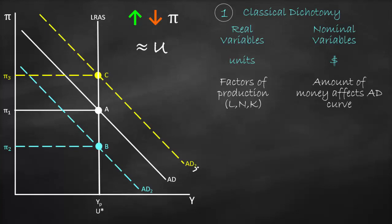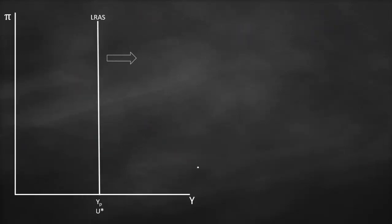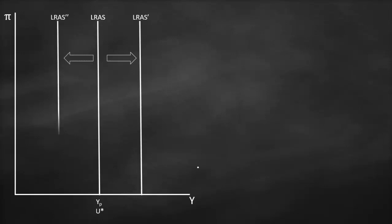For nominal variables, this means that money will affect our aggregate demand curve only, which means we affect the level of inflation but not our level of output. The second theory is called Money Neutrality, which means that the money supply will affect nominal variables — such as prices or wages — but not real variables such as output. Therefore, this is our long-run aggregate supply curve. If it increases, it will shift to the right; if it decreases, it will shift to the left.